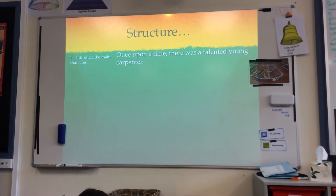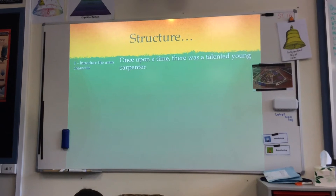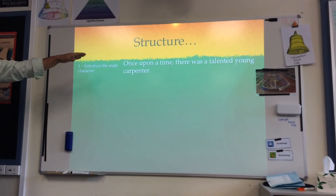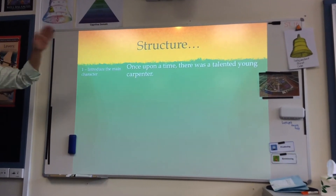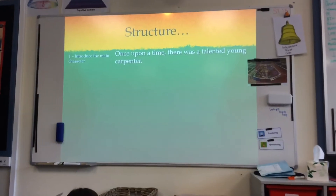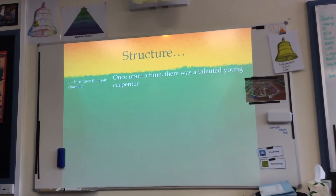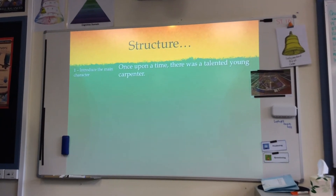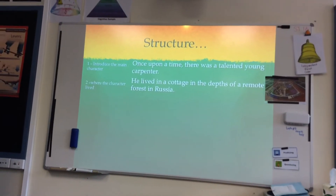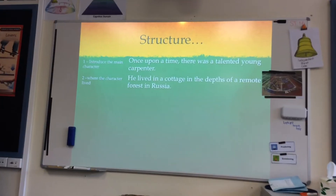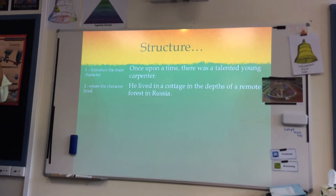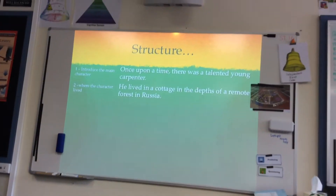So, sentence one: 'Once upon a time there was a talented young carpenter.' Your first sentence is going to introduce the main character. Observe the features of that sentence — there's a talented young carpenter. Also today, I want your sentences all to start with 'once upon a time.' That's a common theme we're all going to have today. Number two: 'He lived in a cottage in the depths of a remote forest in Russia.' Sentence one is the character. Sentence two is where they live — it's the setting, it's the location.